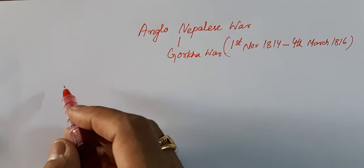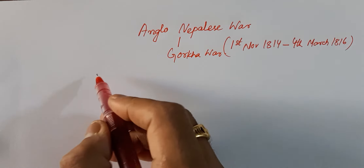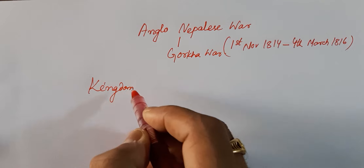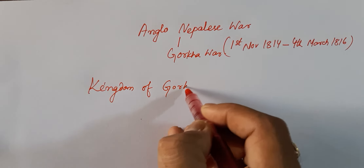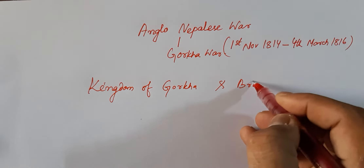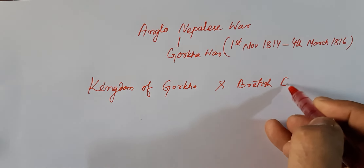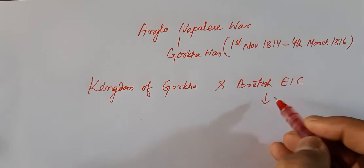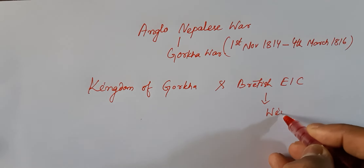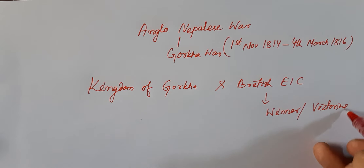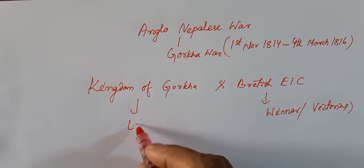This war was fought between the Kingdom of Gorkha and the British East India Company. In this war, the East India Company was victorious, and the Kingdom of Gorkha was the loser.